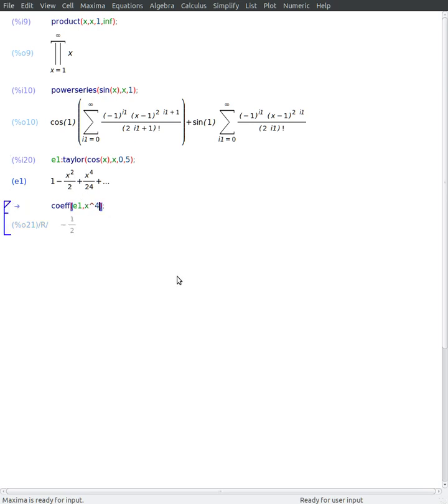If I go to x to the fourth, it gives me here the correct coefficient. And if I try x to the third, it will say I don't have anything in x to the third. So finding coefficients in one expression is something that is very easily done in Maxima as well with the function coef.